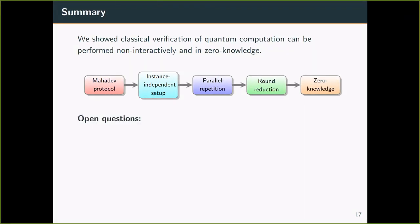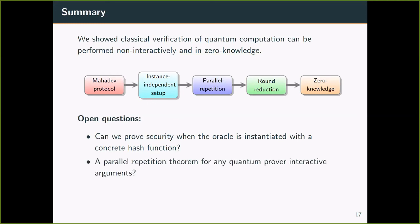I'll wrap up with a few open questions. First, can we prove security when the oracle is instantiated with a concrete hash function? Now that the security holds in the random oracle model, in practice we will need to replace it with a concrete construction. Can we show that there is a construction that the security still holds? Next, can we show a parallel repetition theorem for any interactive arguments against a quantum prover? Finally, can we give a simpler NIZK argument for BQP or QMA? Our construction relies on NIZK for NP and a circularly secure FHE. Can we use a lighter construction for the same task?